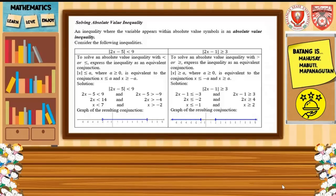We also have the absolute value of 2x minus 1 is greater than or equal to 3. To solve the absolute value of inequality with greater than or greater than or equal, express the inequality as the equivalent disjunction. So we have the absolute value of x is greater than or equal to a, where a is greater than or equal to 0. It is equivalent to the conjunction: x is less than or equal to negative a, and x is greater than or equal to a.